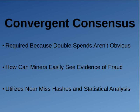Hey everybody, it's Crypto Anarchist again and I'm bringing you guys another video on cryptocurrencies. Today we're going to focus on something called convergent consensus. Other people call it weak blocks, or you can call it rolling blocks. There's a lot of different names for it.